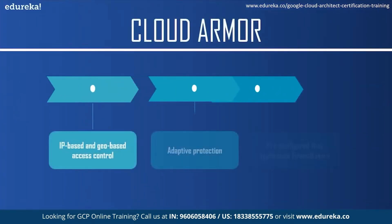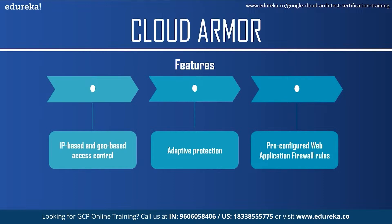Now let us take a look at some features of Google Cloud Armor. The first feature is IP-based and geo-based access control — you can filter incoming traffic based on IPv4 and IPv6 addresses or CIDRs, and enforce geographic-based access control to allow or deny traffic based on source geographical location using Google GeoIP mapping. The next feature is adaptive protection — Cloud Armor automatically detects and helps mitigate high-volume DDoS attacks with a machine learning system trained locally on your applications. The last feature is pre-configured web application firewall rules — Cloud Armor comes with an out-of-the-box rule set based on industry standards to reduce common web application vulnerabilities and provide protection from various web attacks.